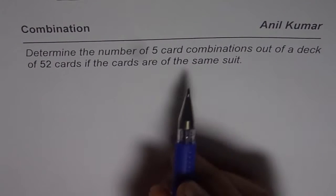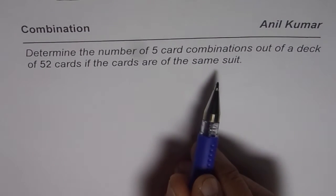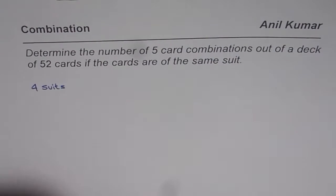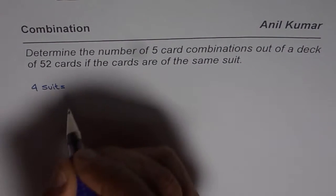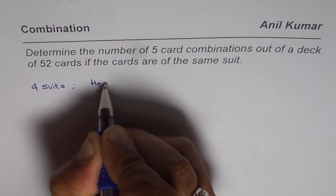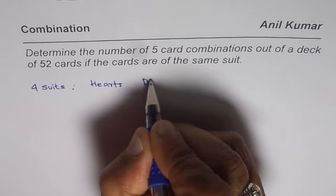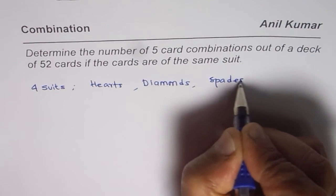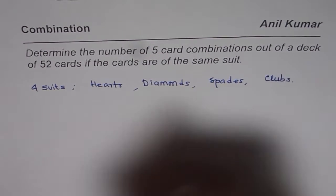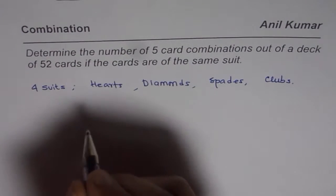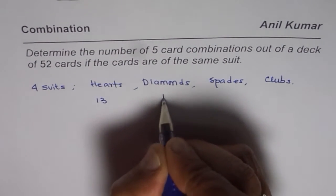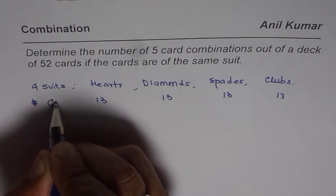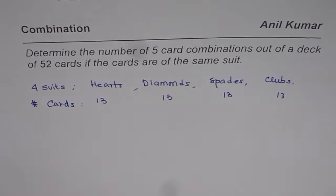As you know, in the game of cards we have four different suits. These suits are hearts, diamonds, spades, and clubs. For each suit we have 13 cards each, so there are 52 cards in all.